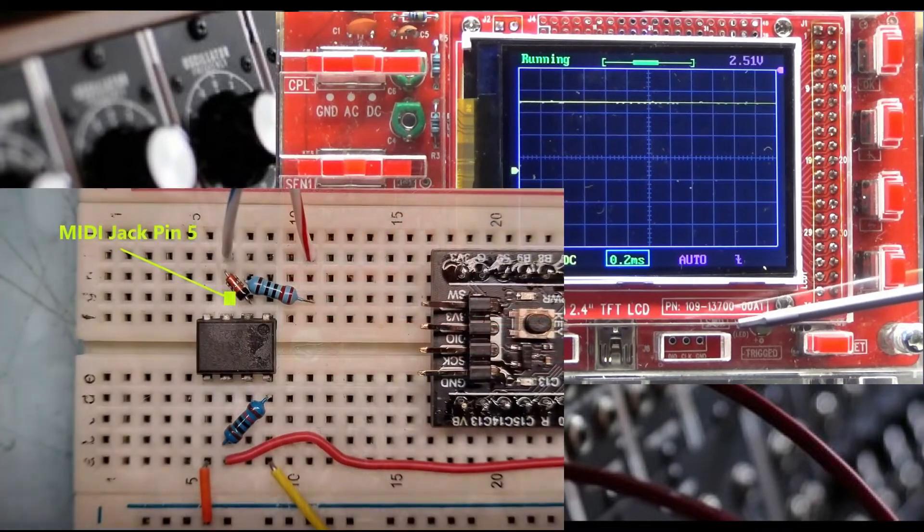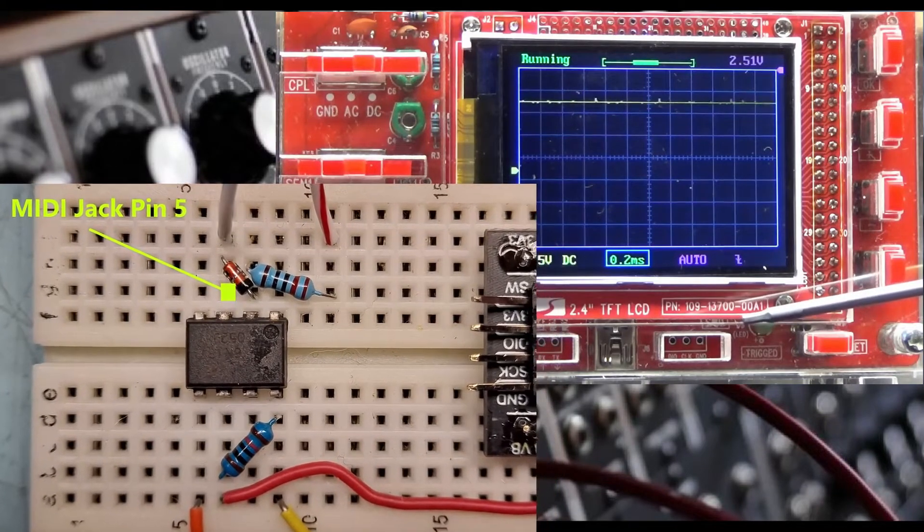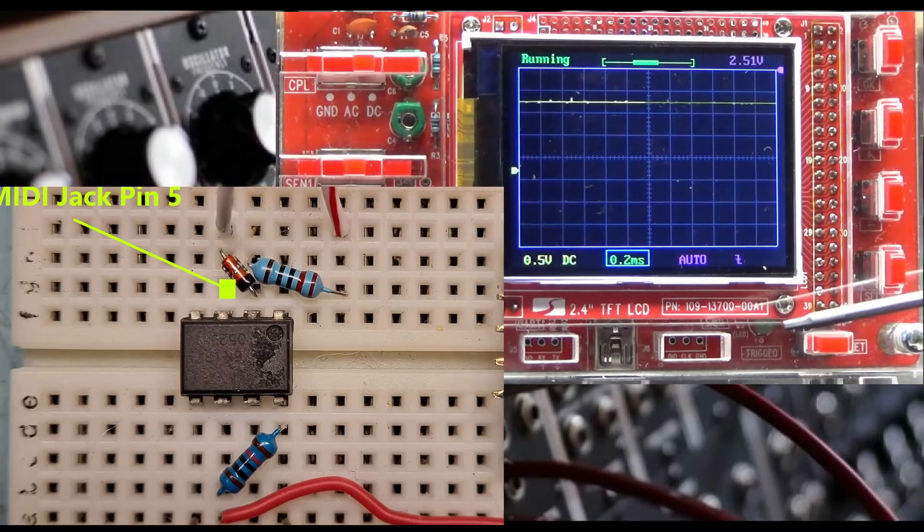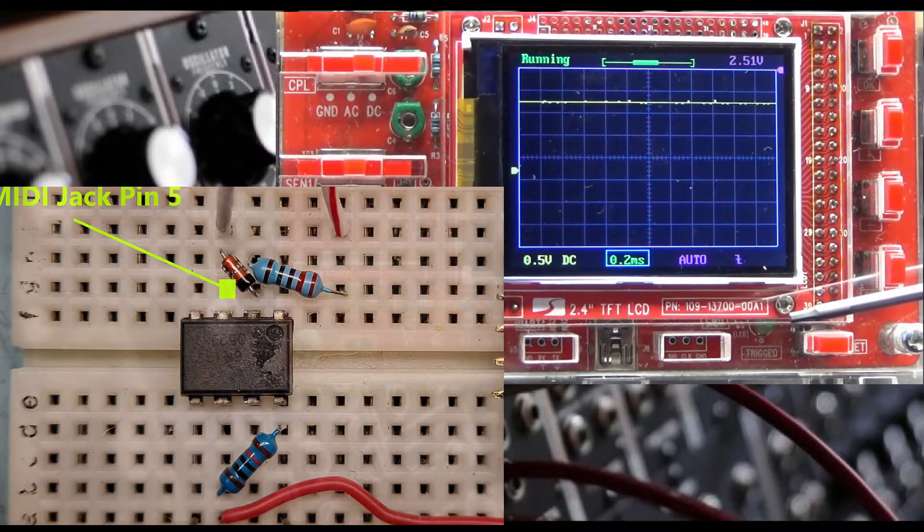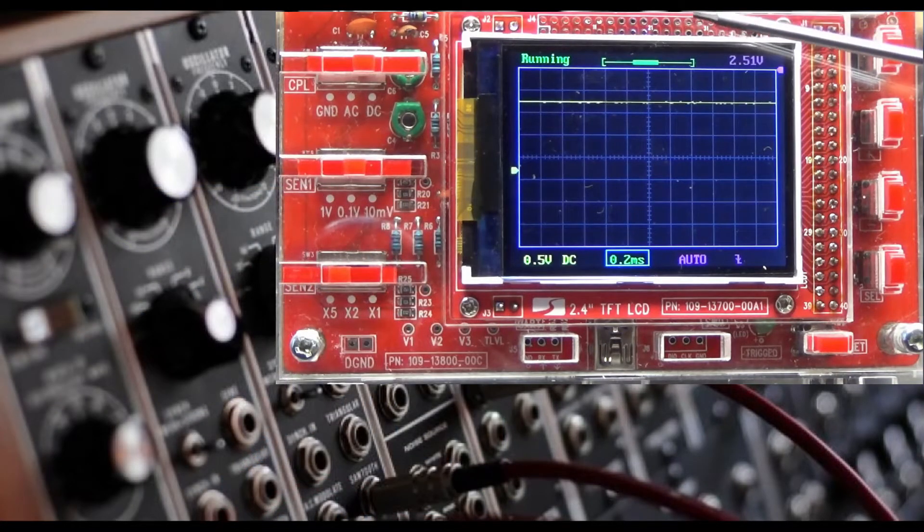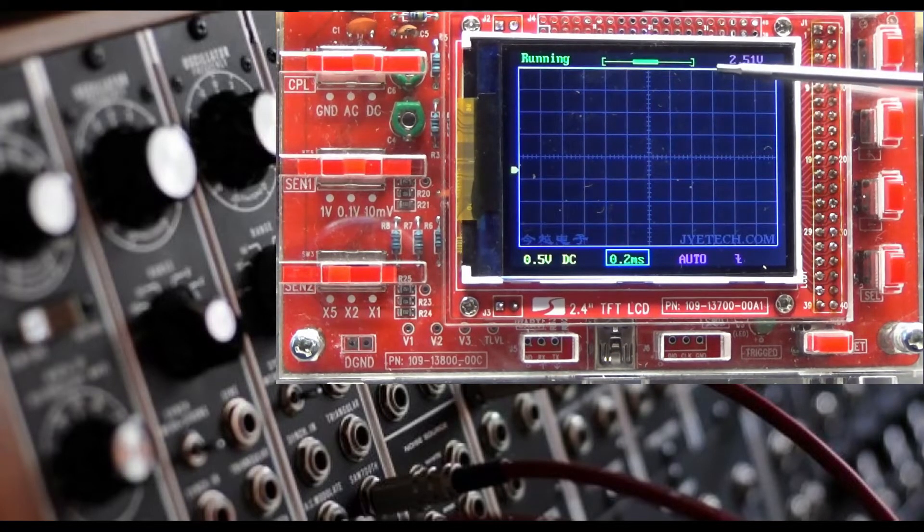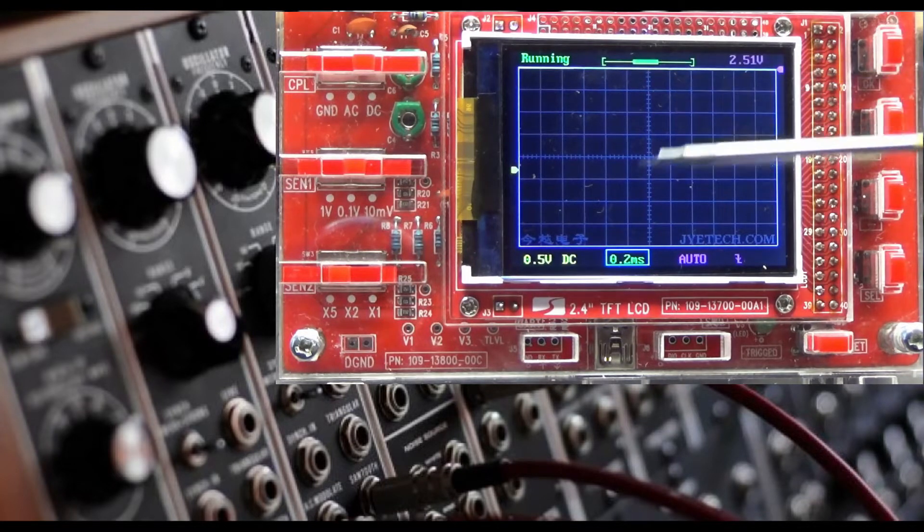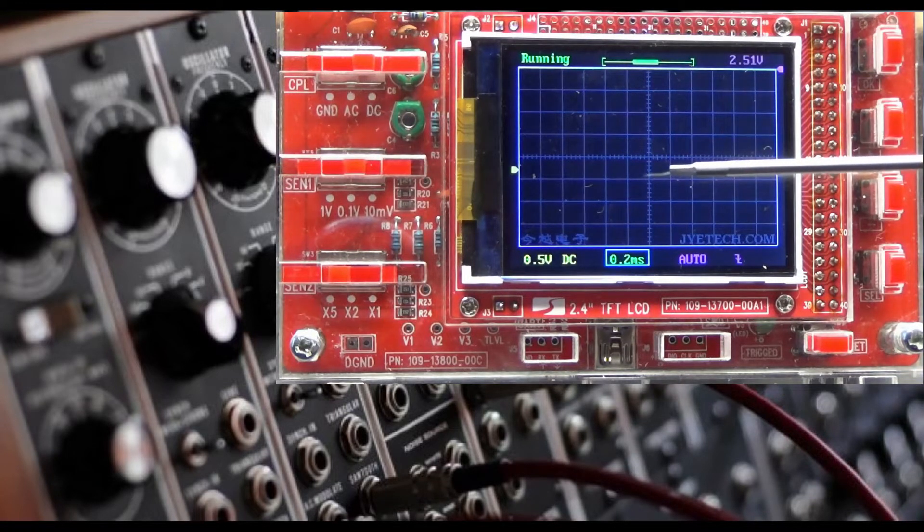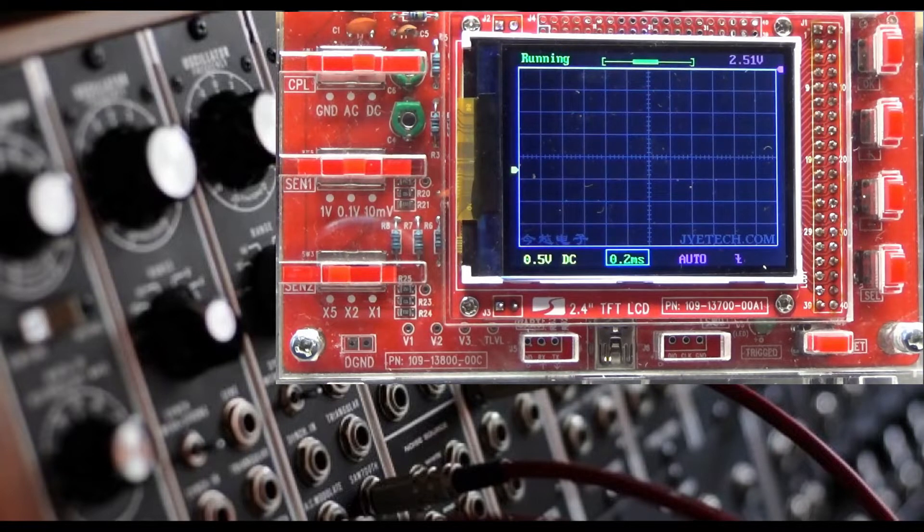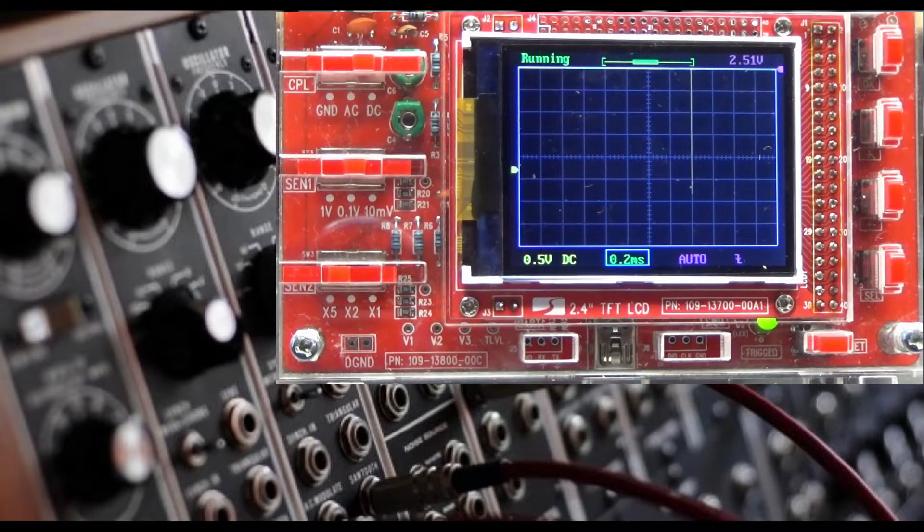Next I'm going to move it over to the midi jack pin 5 which would be on the opposite side of the breadboard. When I do so this yellow line will go off the screen because the input side is 5 volts. Now we are off of the screen but now we should be able to press some keys or in this case I'm going to move the pitch bend wheel. And what we're seeing is digital information being sent.